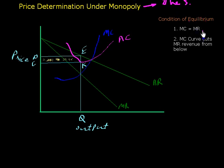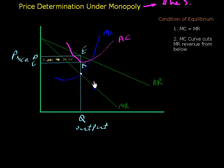There are two conditions for equilibrium. One: marginal cost must be equal to marginal revenue. Two: the marginal cost curve must cut the marginal revenue curve from below at that point. Here, our marginal cost curve and marginal revenue curve cut each other and marginal cost is equal to marginal revenue.